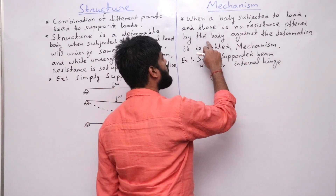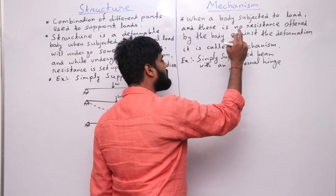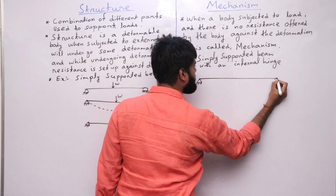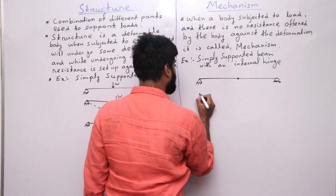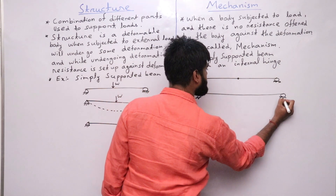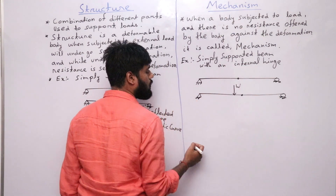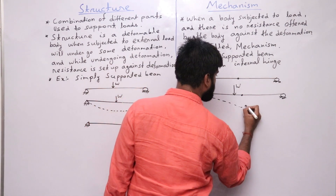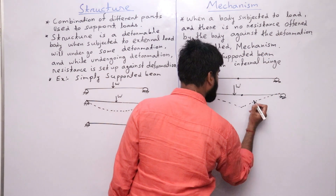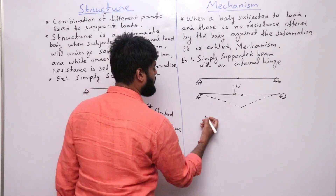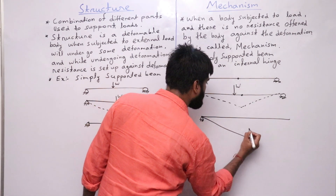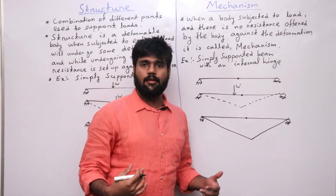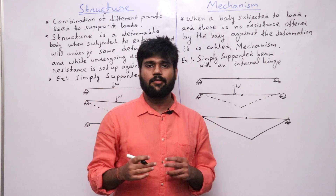What's a mechanism? A mechanism is when a body is subjected to load and there is no resistance offered by the body against the deformation. An example of a mechanism is a simply supported beam with an internal hinge. After the application of load, the deflected shape will be a straight line, and after removal of the load the body will not come back to its original position. This is an example of a mechanism.